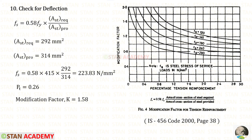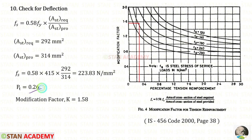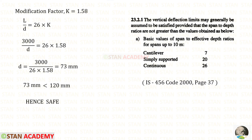Now let us apply the check for deflection. Substituting all values into the equation, fy is 415 N/mm². Using the percentage of steel Pt and stress Fs, from the modification factor chart K is approximately 1.58. The allowable L/d ratio is 26 × 1.58, giving a required effective depth of 73 mm, which is less than our provided effective depth of 120 mm. So the deflection check is satisfied.